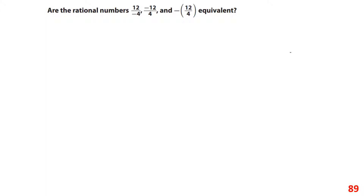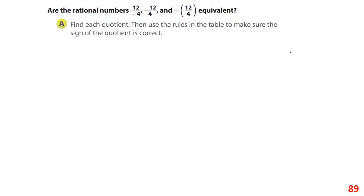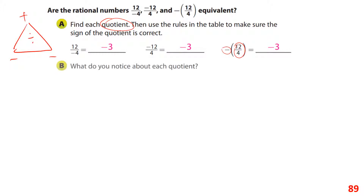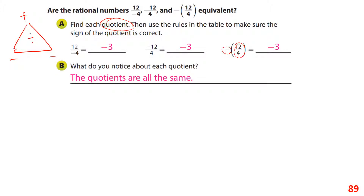So are these three problems the same? The quotient is the answer to a division problem, so we'll find out. 12 divided by negative 4 is negative 3. Coming back to the Xero triangle: a positive divided by a negative is a negative, and a negative divided by a positive is also negative 3. And 12 divided by 4 is 3, then we put a negative in front — that's still negative 3.